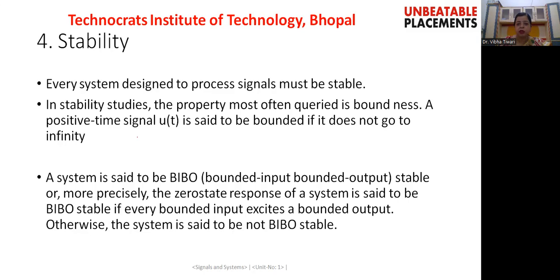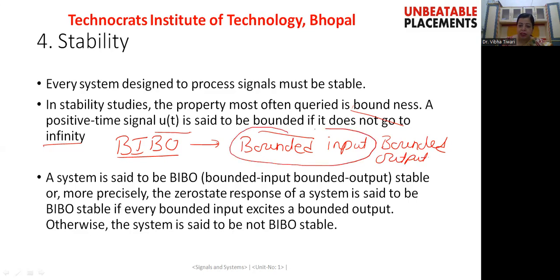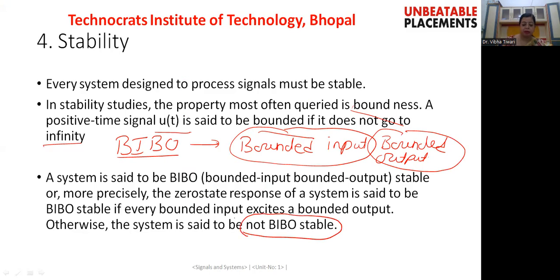Today let us start with another property: stability. Whatever systems are designed to process a signal must be stable. In stability studies, the property most often required is boundedness. A signal x(t) is said to be bounded if it does not go to infinity. When considering stability of a system, we are interested in BIBO stability, where BIBO stands for Bounded Input Bounded Output.